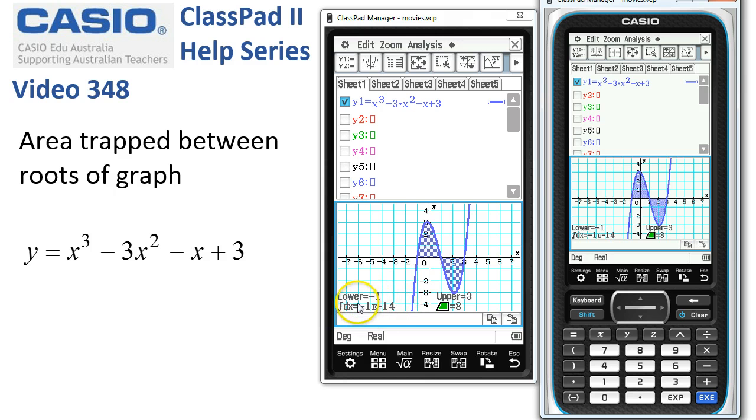You can see it's worked out the value of the integral, which is pretty close to nothing here: minus 1 times 10 to the negative 14. And here it's indicating the actual area trapped between the axes and the curve is equal to 8 between those roots.